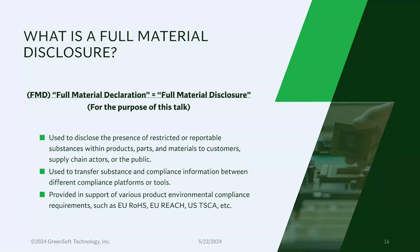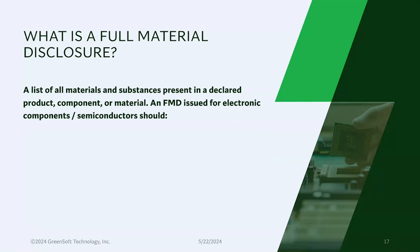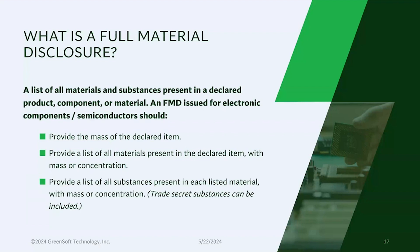These are typically provided in support of various environmental compliance requirements: RoHS, REACH, POPs, TSCA, etc. When producing a full material disclosure for customers, no matter where you are in the supply chain, there are certain required elements. You want to disclose the mass of the item, provide a list of all materials present in the declared item with the mass or concentration of each, and also provide a list of all substances present in each of those materials with mass or concentration as well.